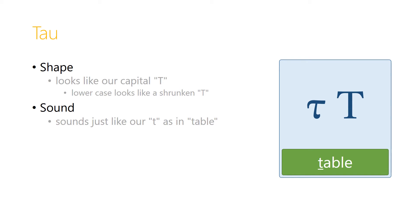Tau looks in the uppercase just like our letter T, and in lowercase looks like a slightly curvy version of our uppercase T. The sound is just like our T, as in table. It never gets softened like in -tion (T-I-O-N). It always has the hard T sound.